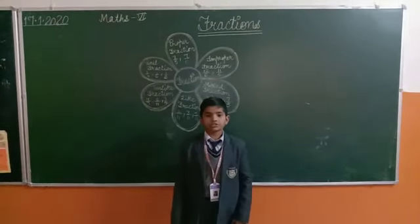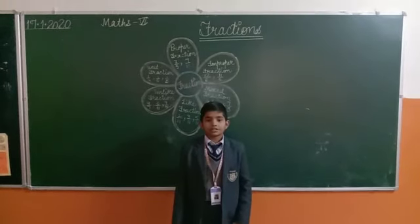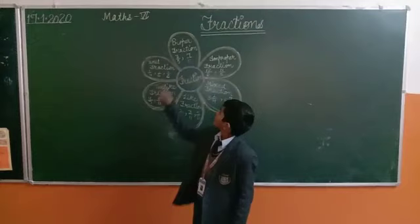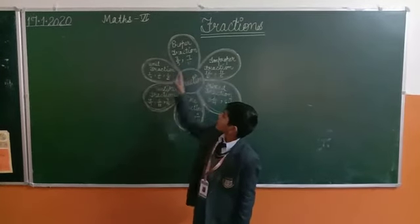Proper fraction: the fraction in which the numerator is less than the denominator is called a proper fraction. Example: 3 upon 5, 7 upon 11.